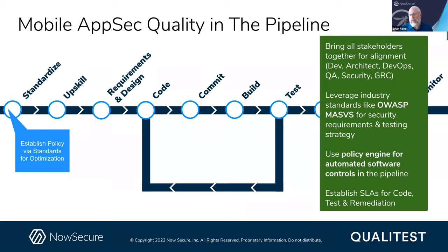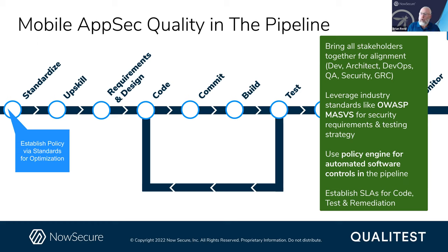Going back to quality best practices, the first thing is establishing standards and policy. Best-in-class organizations bring stakeholders together to define what security and privacy mean for how the pipeline will run — the architectural requirements, best practices, the SLAs. Leverage industry standards like the OWASP MASVS as your core to get there. A lot of organizations think of OWASP MASVS as being for security teams — it's not. It's actually for development teams too. If you actually read the MASVS, you'll find entire chapters that teach developers and architects how to design and write code in a secure way. Deploy a policy engine for automated controls in the pipeline. NowSecure is going to be announcing very soon the world's first automated policy engine that allows the pipeline to run autonomously based on policies defined up front by all these stakeholders.